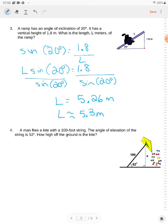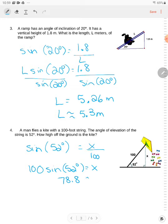A man flies a kite with a 100-foot string. The angle of elevation of the string is 52. How high off the ground is the kite? We want to know how high the kite is, find the height. So sine of 52 degrees is equal to x over 100. So 100 sine of 52 is equal to x. We have 100 sine of 52 is 78.8. So the best answer is 79 feet.